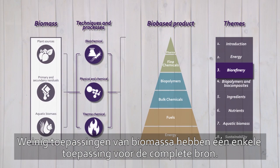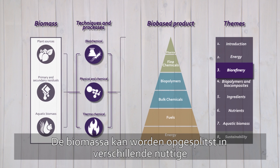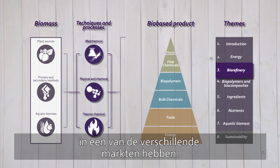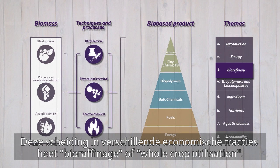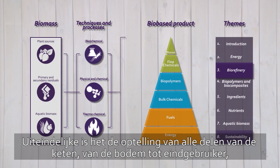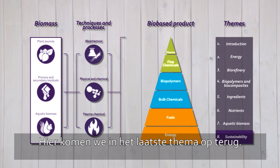Few biomass applications have one single use for the complete resource — just try to come up with one. The biomass is best split up into different useful and less useful parts, for all of which we preferably must find a profitable destination in any of the different markets. This separation into different economic fractions is called biorefinery, or whole crop utilization. Biorefinery is treated in detail in week 3. In the end, it is the summation over all parts and over the supply chain from soil to end user that determines the economic and environmental viability of the process.